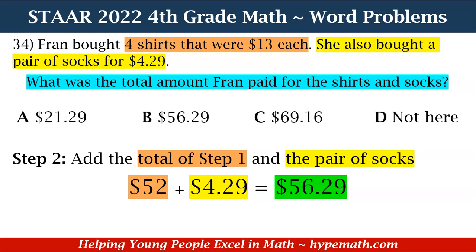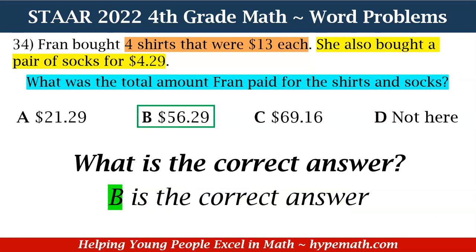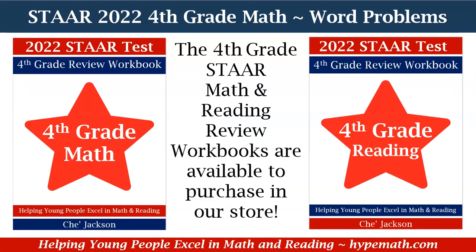Now that we have our final answer, what is our correct answer? Looking at our answer choices, do you see the one that says $56.29? Yes, the correct answer is B. Great job, fourth graders. And that is it for our review of one and two-step problems, part two. We have our fourth grade math and reading review workbooks available for purchase in our store. This is Shea Jackson with Hype Math. I will talk to you later.